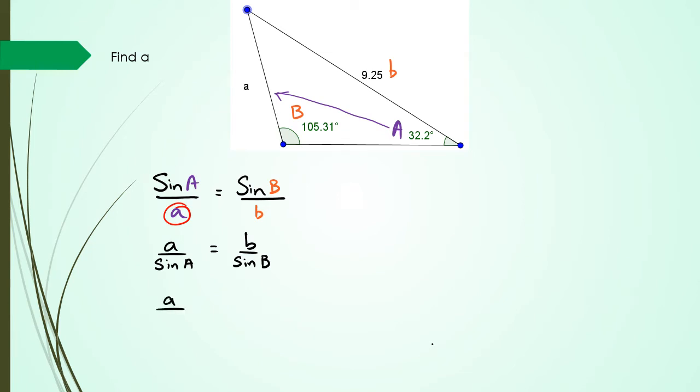So now I have A which is an unknown, sine A well that's 32.2, B is 9.25 divided by sine B which is 105.31.